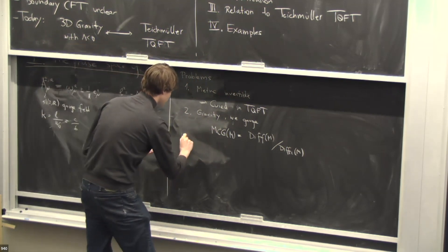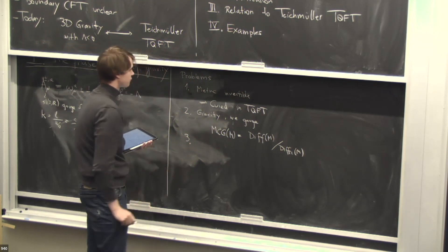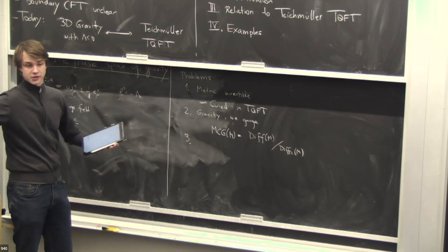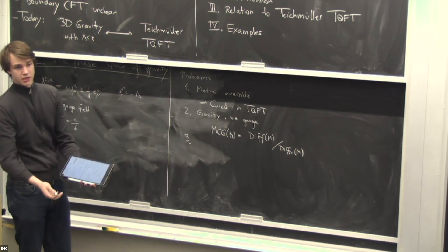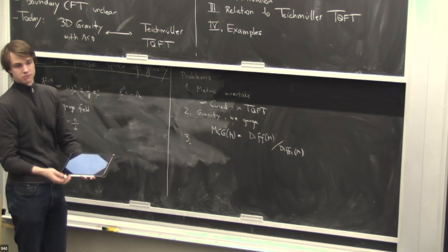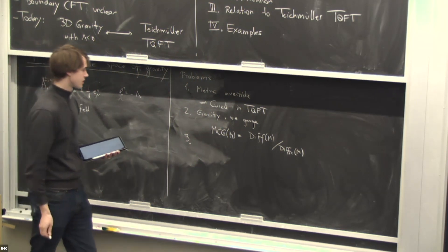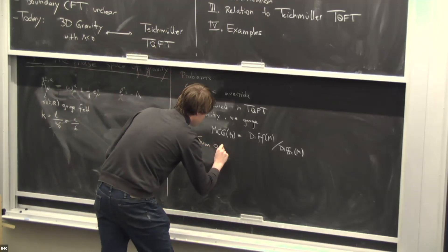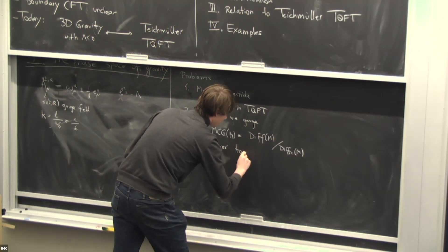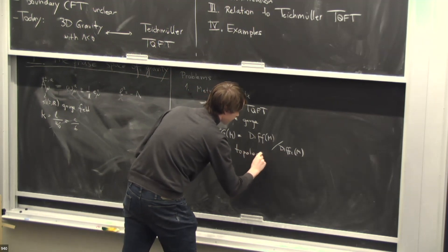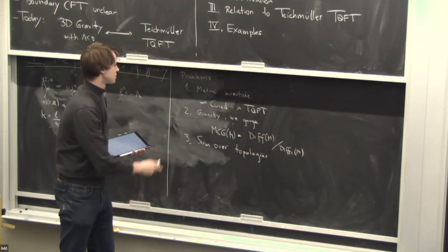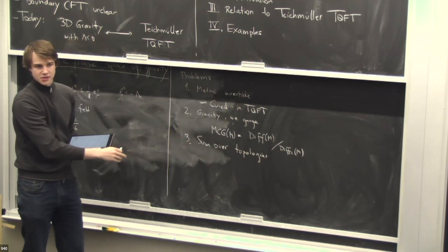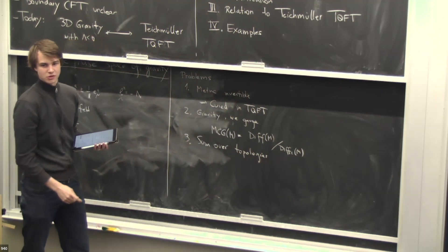The third problem is that in gravity we should sum over topologies with fixed boundary conditions, whereas in gauge theory we usually fix a background manifold. Of these three problems, problem one seems hardest to cure, while three you can do by hand by summing over topologies at the end, and two requires dividing by the mapping class group, which has subtleties because the group is often infinite.